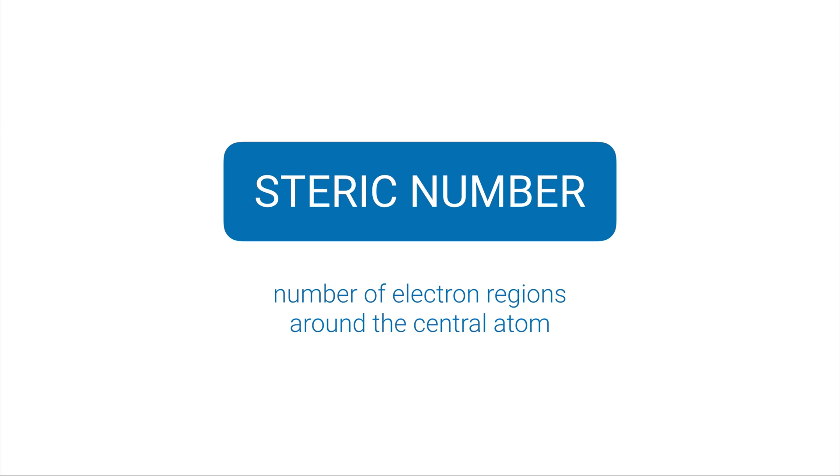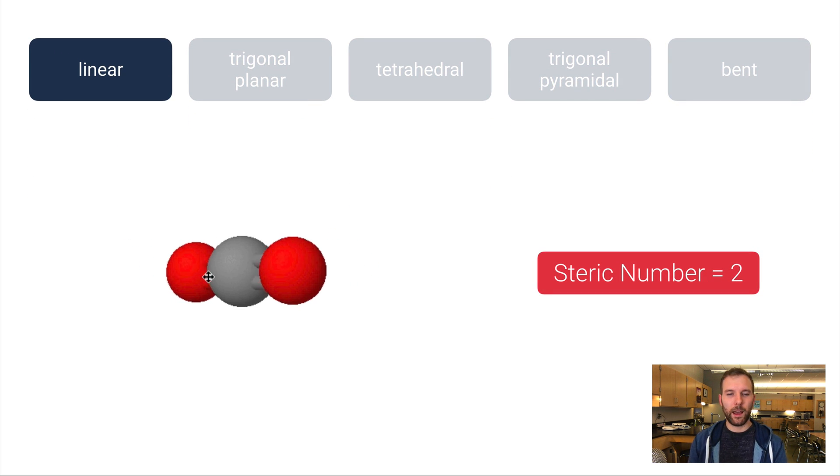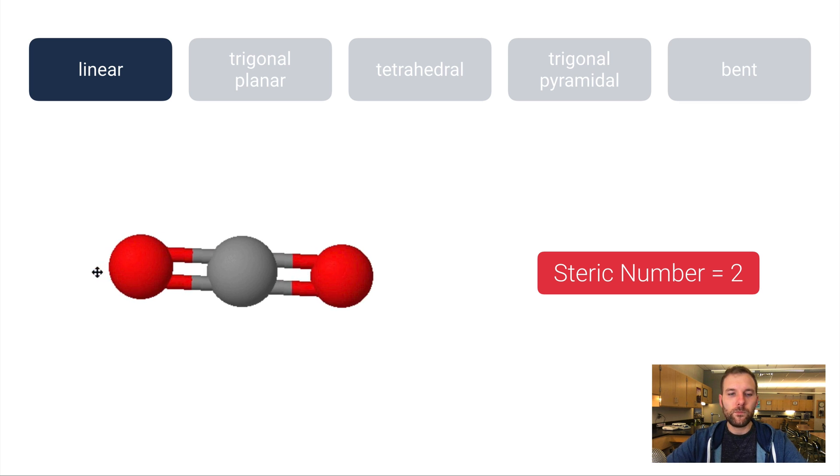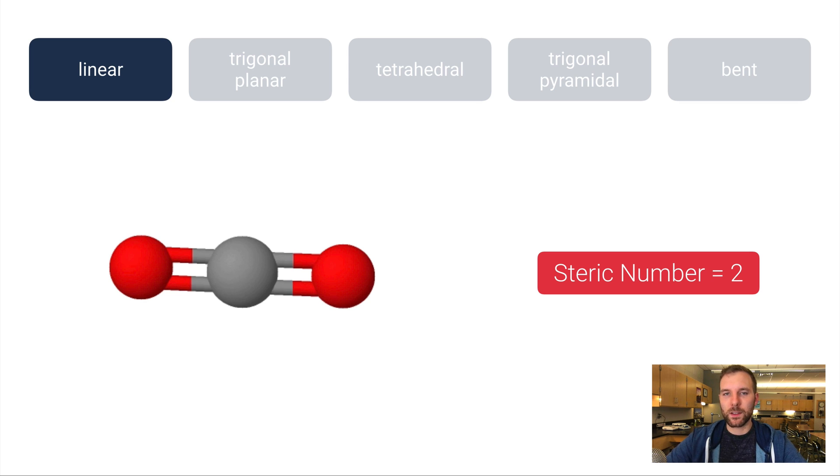So essentially, to figure out the steric number for any molecule, you just add however many bonds are around the central atom to however many lone pairs are around the central atom. We're going to use that to differentiate between these five shapes. Let's start with linear. On the left here I've drawn out a molecule that has this shape, and I'm just going to rotate it around in three dimensions so you can kind of see that these things are 3D. This molecule, by the way, is carbon dioxide, CO2. Notice that there are two double bonds on either side of the carbon, so there are no lone pairs around this carbon atom. There are only two electron regions because there's a double bond on the left and a double bond on the right.